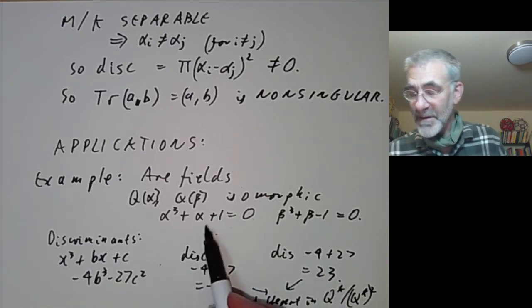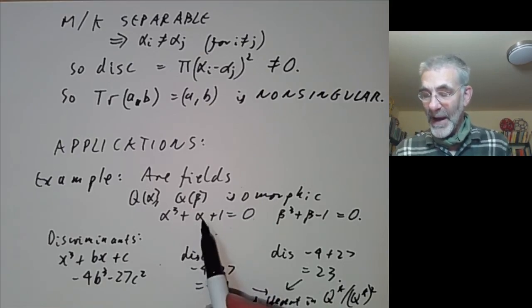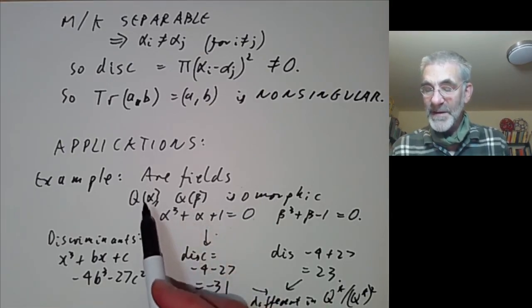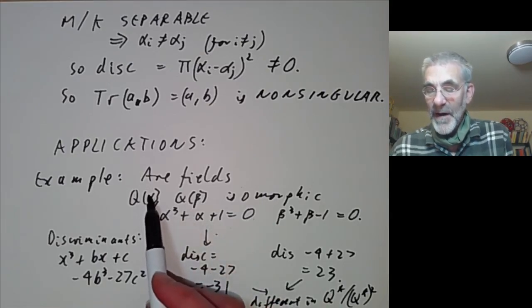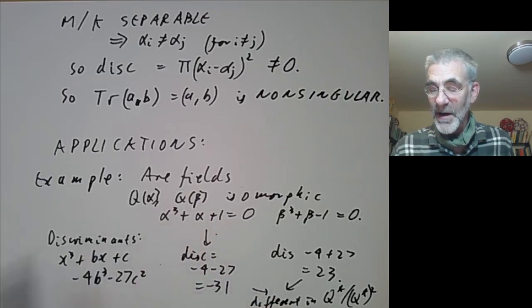Note that the discriminants must differ in Q* modulo Q*² — you can't just say they're different as integers; you have to verify their ratio is not the square of a rational number. The discriminant turns out to be a fairly powerful means of telling whether finite extensions of the rationals are isomorphic. There's a theorem in algebraic number theory that for a given discriminant there are only finitely many algebraic number fields with that discriminant.